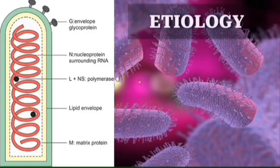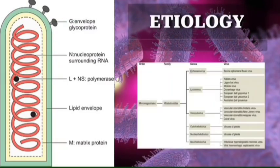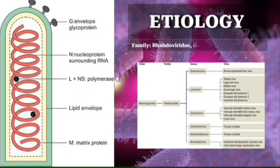The rabies virus belongs to the family Rhabdoviridae, which includes viruses that infect vertebrates, arthropods, and even plants. The genera that infect mammals are two: Vesiculovirus, causing vesicular stomatitis, and Lyssavirus, to which the rabies virus belongs.